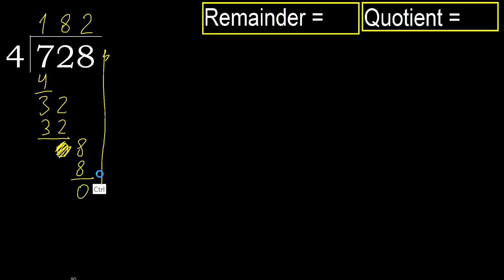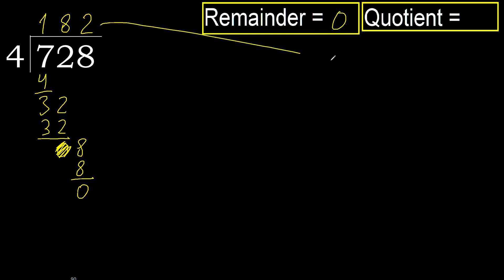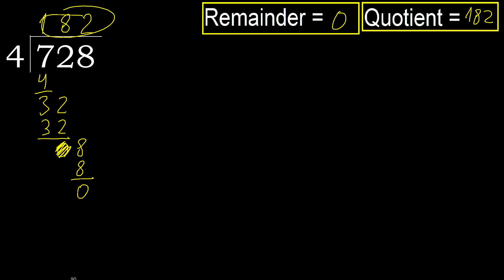There is no next number, therefore finish. The remainder is 0, therefore 728 divided by 4 is 182.